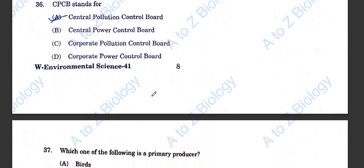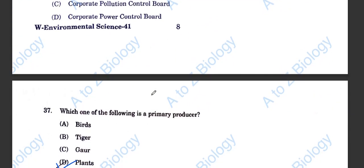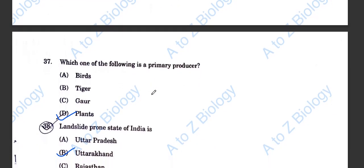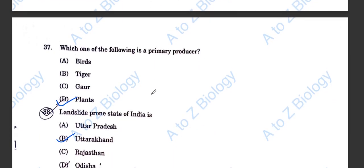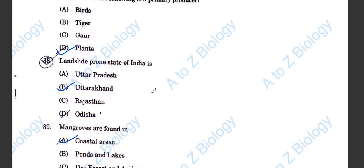Question number 37. Which one of the following is a primary producer? Plants. Very easy. Question 38. Landslide-prone state of India is Uttarakhand. Question 39. Mangroves are found in coastal areas.